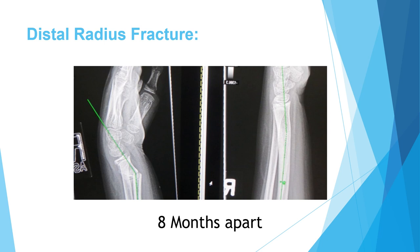Here is a picture showing how much remodeling you can get — this is one of my patients. These x-rays are only eight months apart. This is a six-year-old boy with about 45 degrees of distal radius angulation, and only eight months later there is minimal nine-degree angulation. There is a large remodeling potential in the distal radius fracture because the distal radius physis is a very active growth plate with lots of growth, so the expected remodeling is very high.